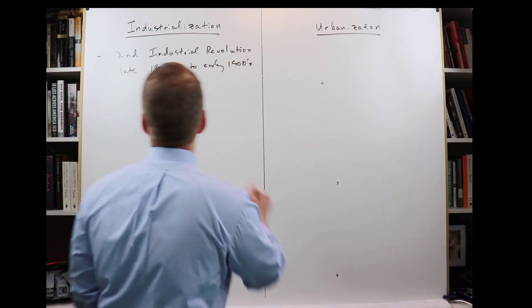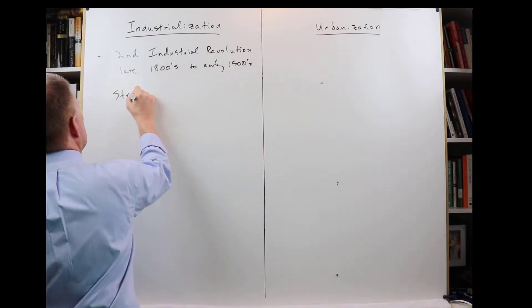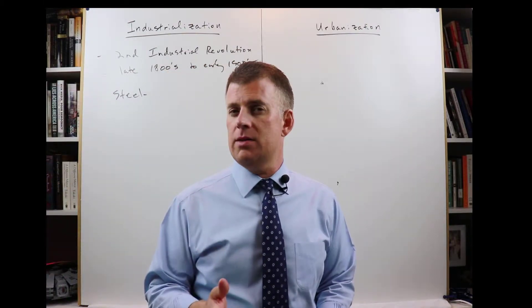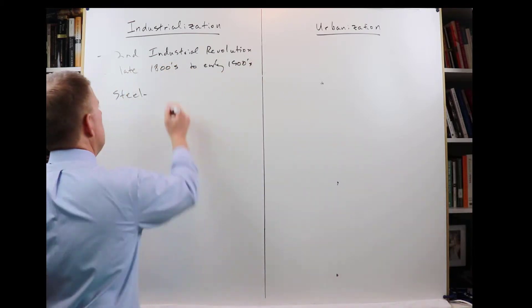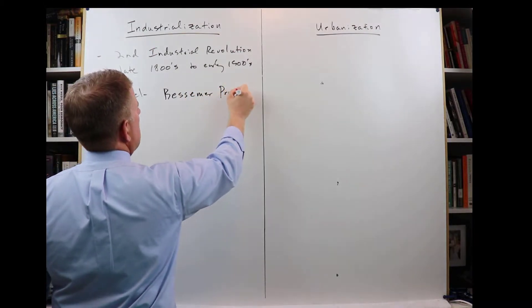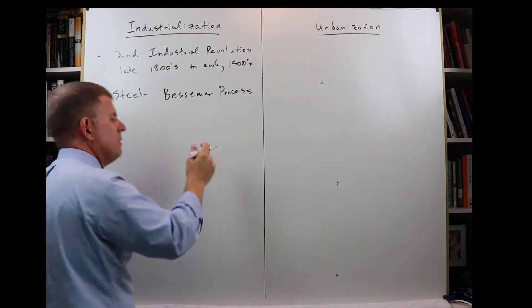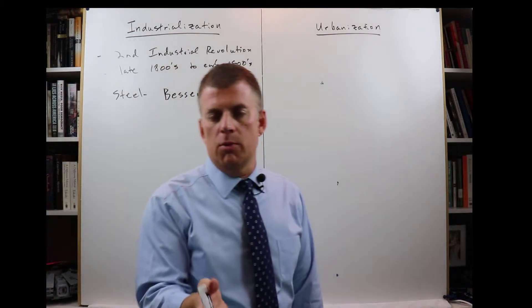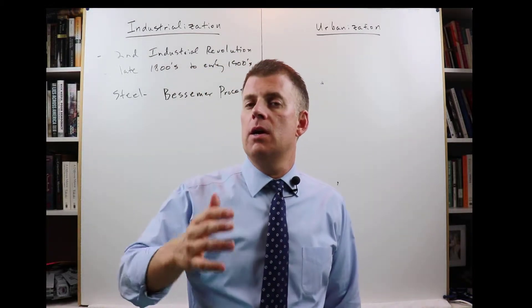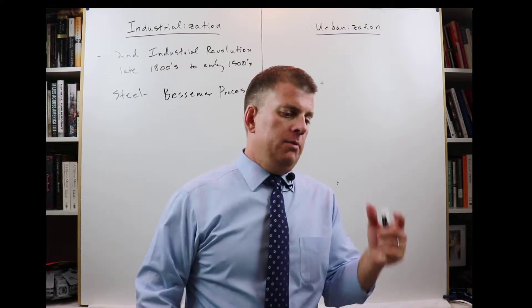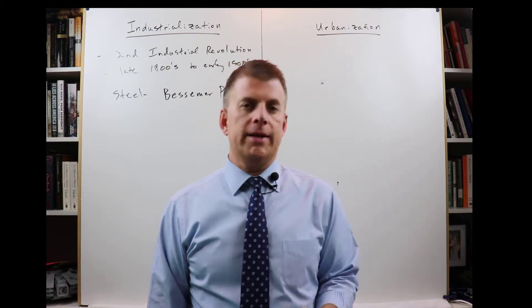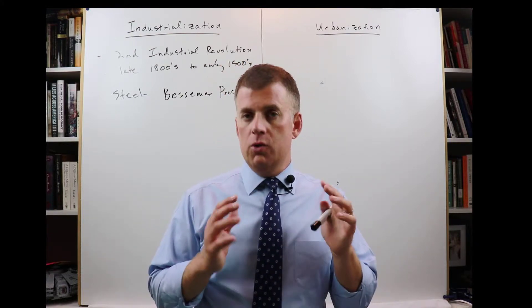The first area was steel production. The process that you're going to want to know is the Bessemer process. You don't need to know how the Bessemer process works, you just need to remember what it's called — the Bessemer process — and that process helped to increase steel production, which helped to make more steel available for railroad tracks, skyscrapers, bridges, and more factories, and that really helped to fuel growth.